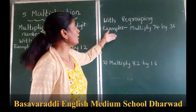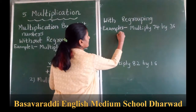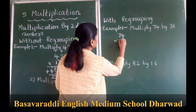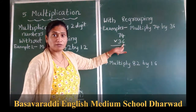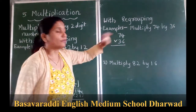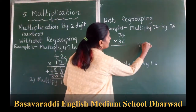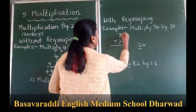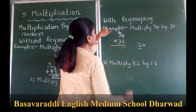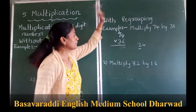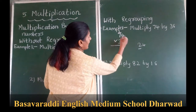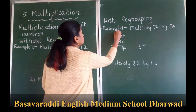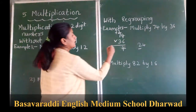Now we will move on with regrouping. The example is 74 multiplied by 36. Going to the ones place: 6 times 4 is 24. We can't write 24 down directly. The 2 is carry over. This is with regrouping. So 2 is carry over and 4 is written. Now 6 times 7 is 42, plus 2 is 44.